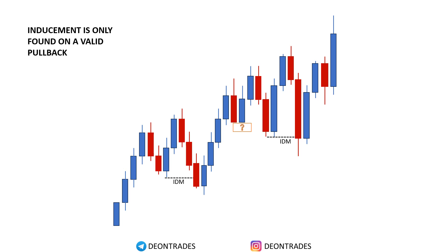Do you see that level with the question mark? You're probably wondering why it has not been marked as inducement, because it looks like the other inducement levels. That level is not a valid pullback and therefore there is no inducement. The price would take out inducement before it continues going in its direction. If you don't have a valid pullback, then you don't have inducement, and no inducement means no trade entry.